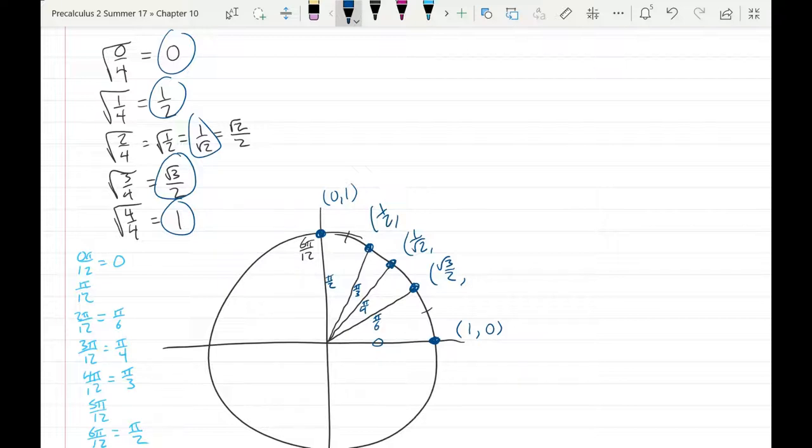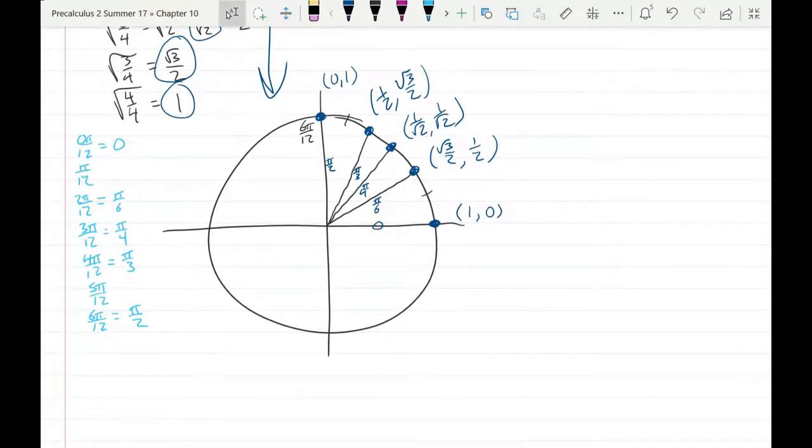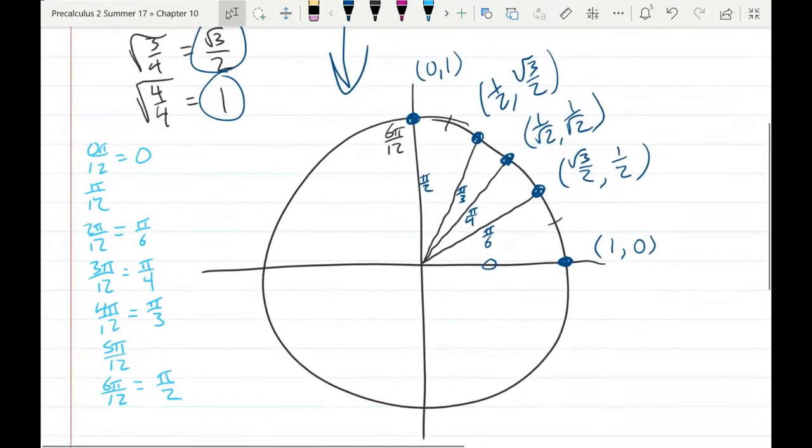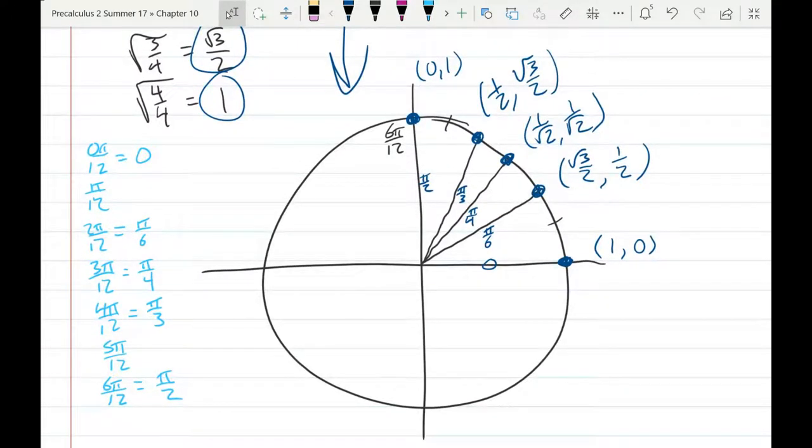Now, how do we do the y-coordinates? The x-coordinates went up. The y-coordinates go down. So the first y-coordinate is 0. The next one's 1 half. 1 over square root 2. Square root 3 over 2. And then of course, you're back at 1. So we have our unit circle here. This is only the first quadrant. Let's do the rest of the quadrants.